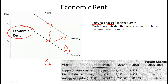Economic rent occurs when the market price is higher than what is required to bring the resource to market. For example, a super-qualified actor — if the demand for his movies suddenly goes up, he makes a lot of money without having to do anything differently. He might have been willing to work for a small amount, but now that demand has gone up, he earns far more.